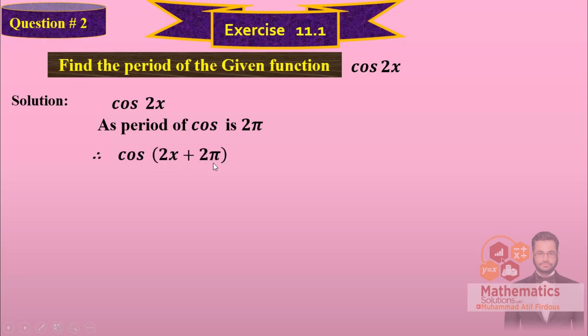We add 2 pi in the angle. The angle here is 2x, so we add 2 pi in the angle of the given function cos(2x), giving cos(2x + 2pi).